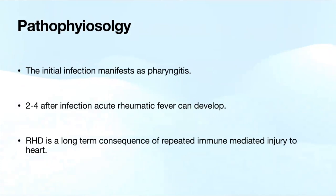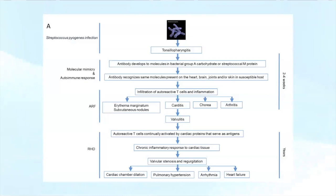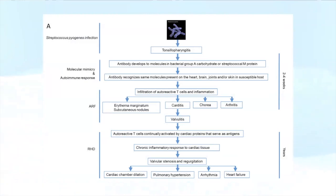The initial infection usually manifests as tonsillopharyngitis. If not treated, two to four weeks later, certain susceptible patients can develop the symptoms of acute rheumatic fever. Rheumatic heart disease is a long-term consequence of repeated immune-mediated injury, as you can have multiple bouts of acute rheumatic fever. The end sequelae we want to avoid include cardiac chamber dilation, pulmonary hypertension, arrhythmia—especially atrial arrhythmias—and heart failure.